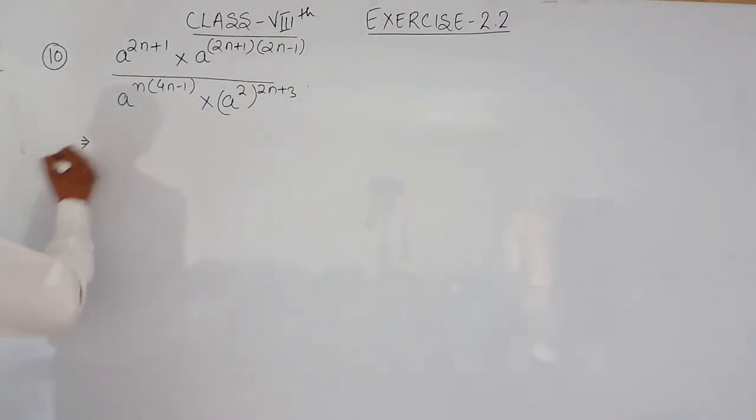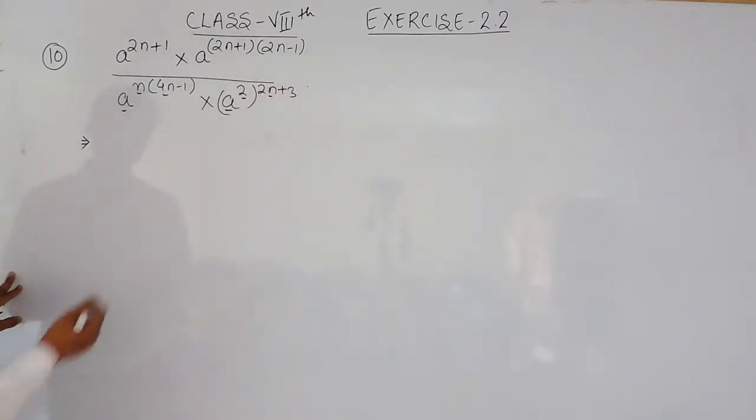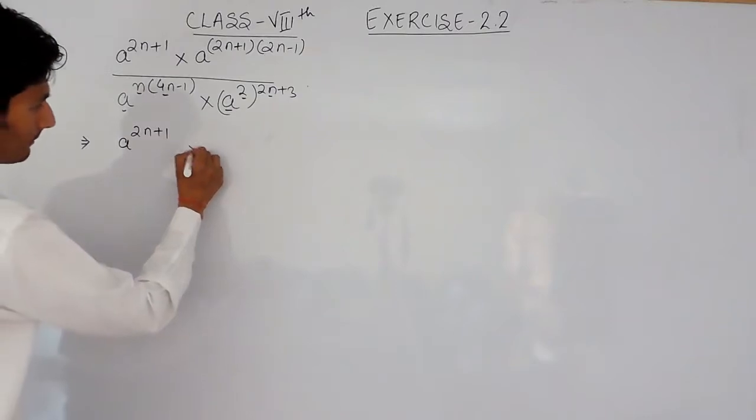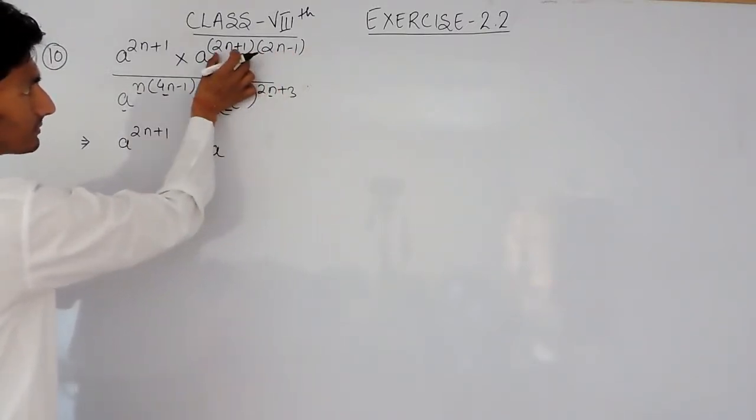Now, as I told you in the previous video, if base has two powers, these powers will be multiplied first. So this is a, 2n plus 1 will remain as it is, multiplied by a. These two are different powers, so these must be multiplied.